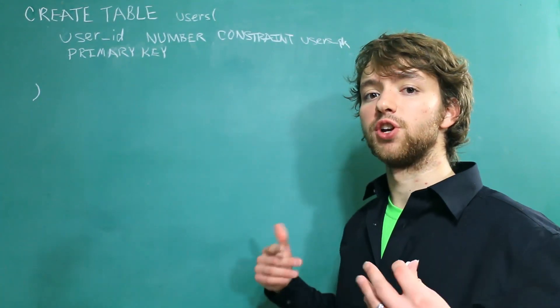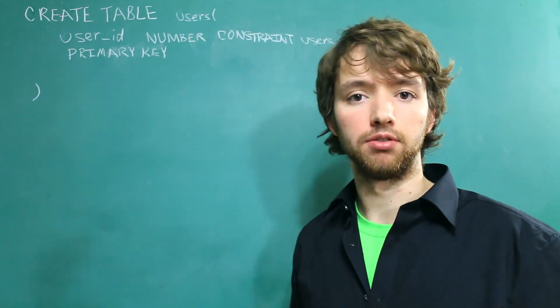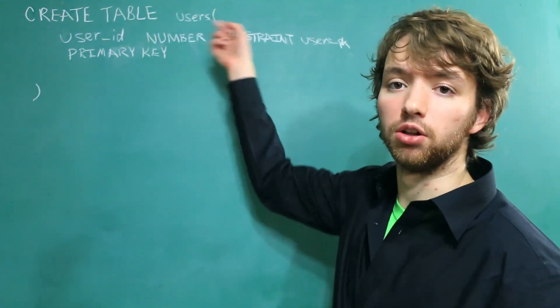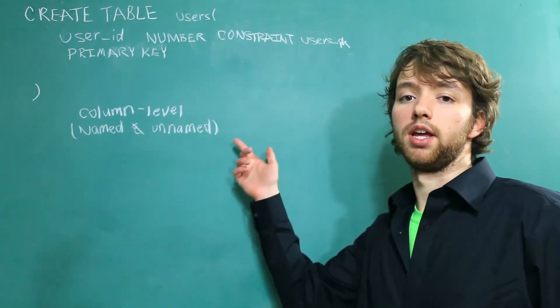So far, we've learned two different ways to make constraints. These were both made at the column level. That means right after the column. And we had two different possibilities. One named and one unnamed.